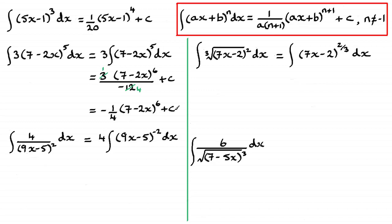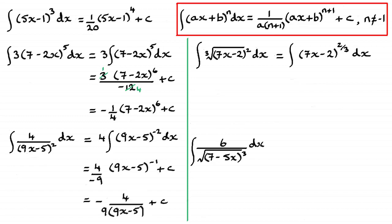I hope you're feeling a bit more confident now. For this next one — you might like to pause the video and have a go — I'm going to add 1 to the power. Adding 1 to minus 2 gives minus 1. I divide by minus 1 times 9, which is minus 9. So the answer is 4 over minus 9 times (9x minus 5) to the power minus 1, which simplifies to minus 4 ninths times (9x minus 5) to the minus 1, plus c.